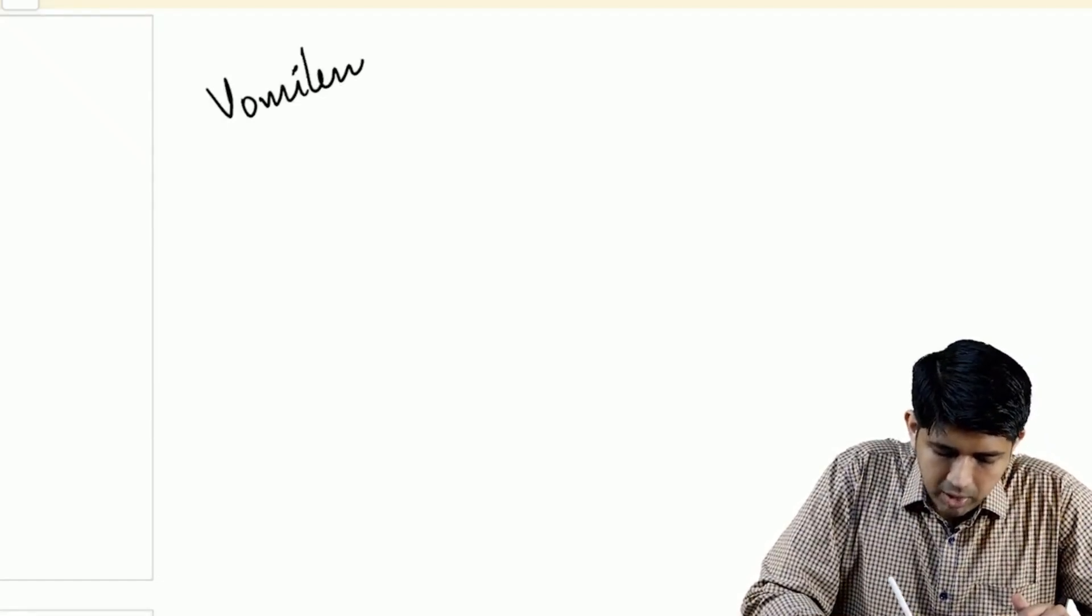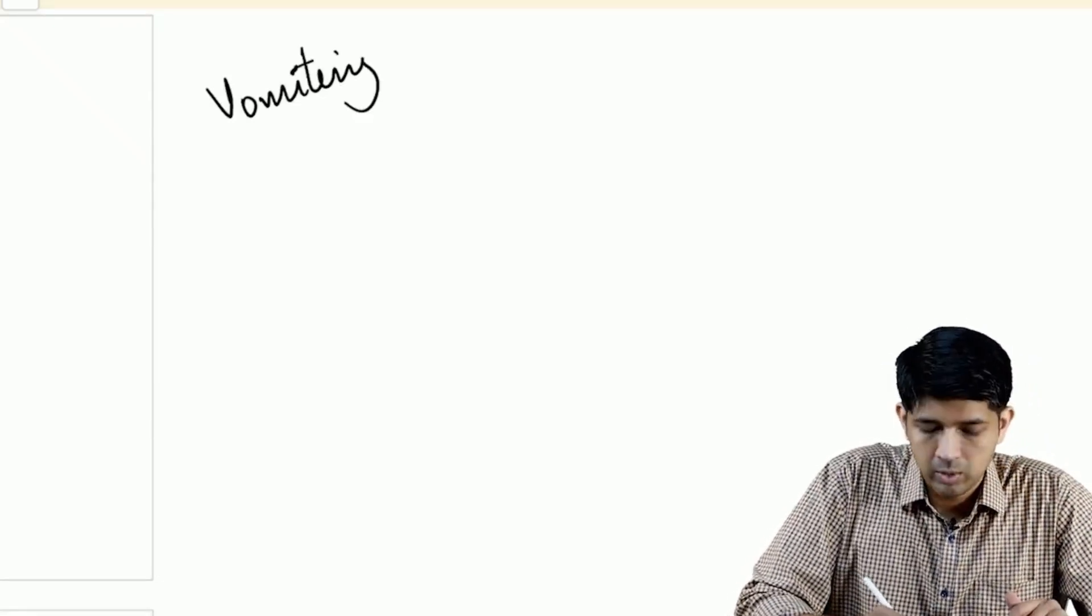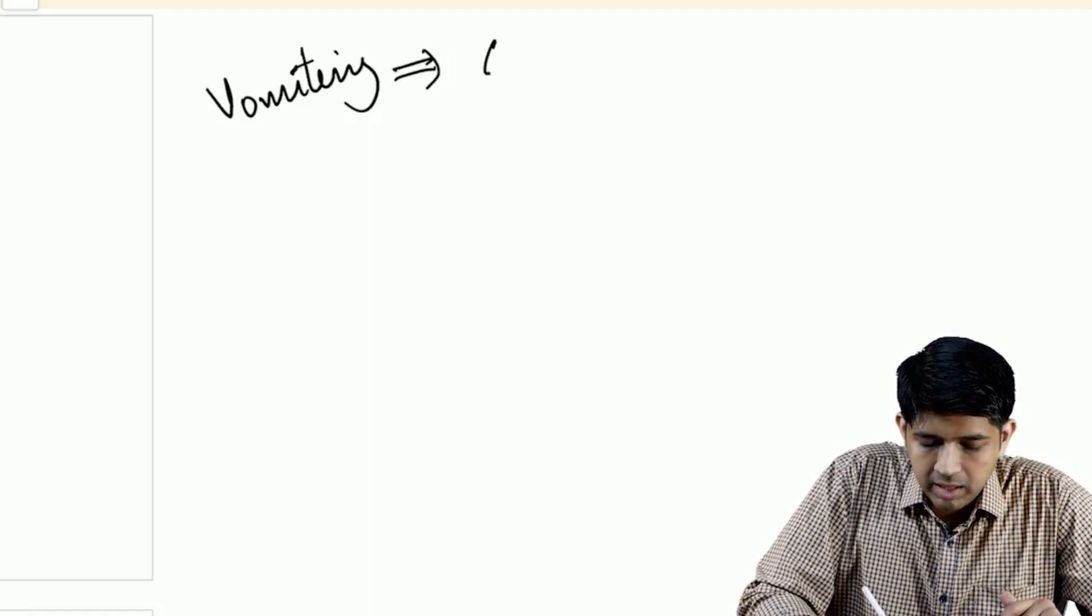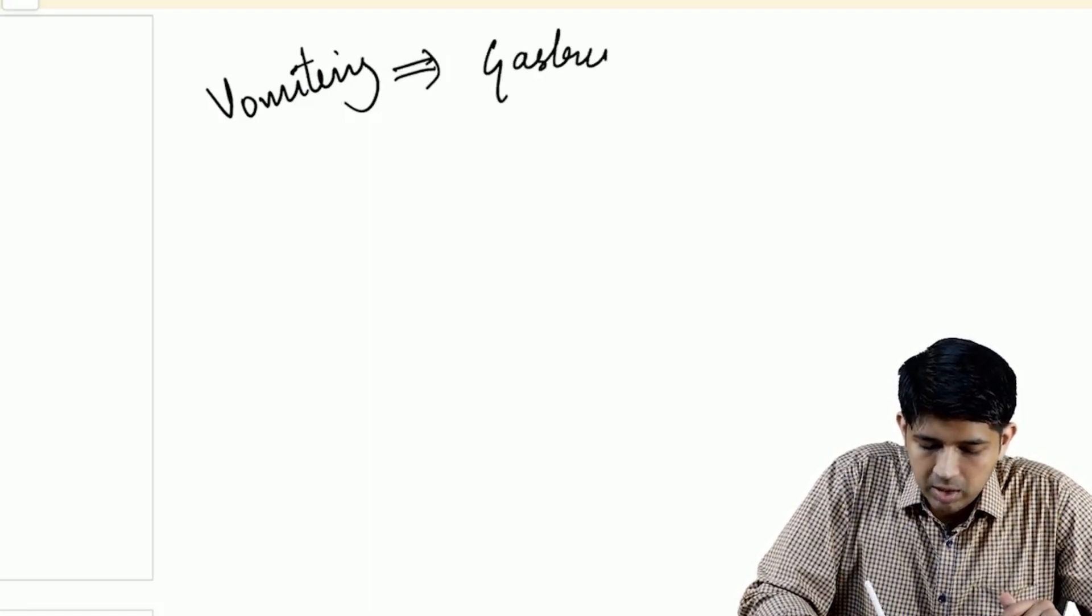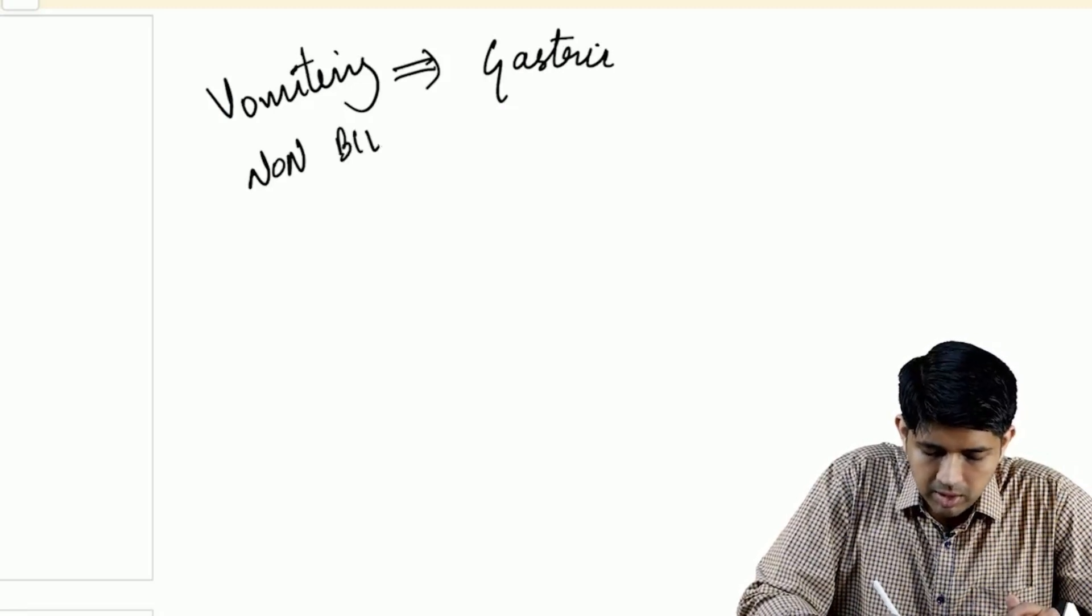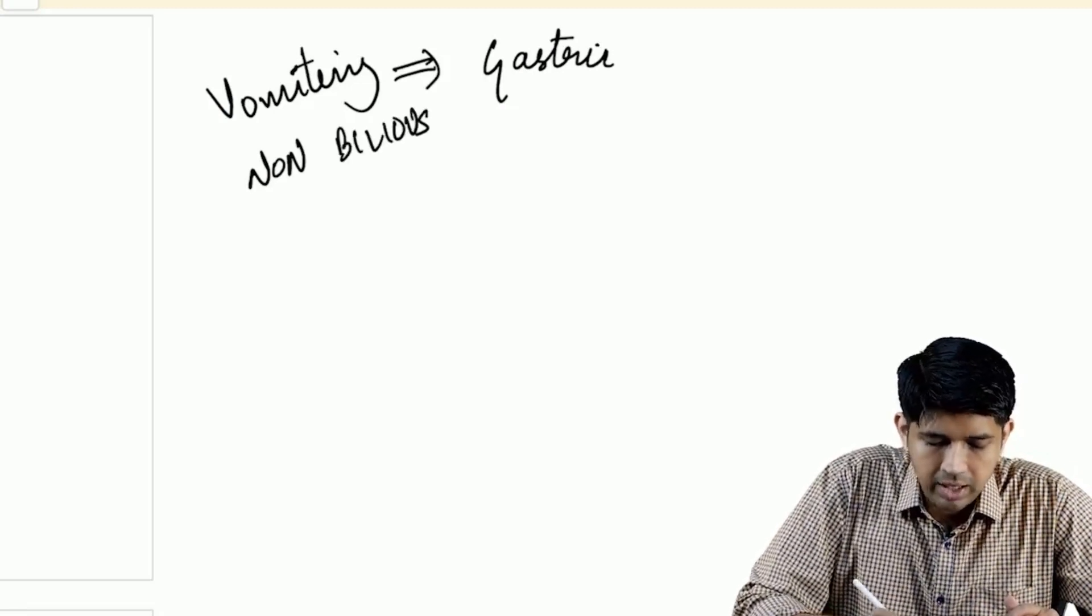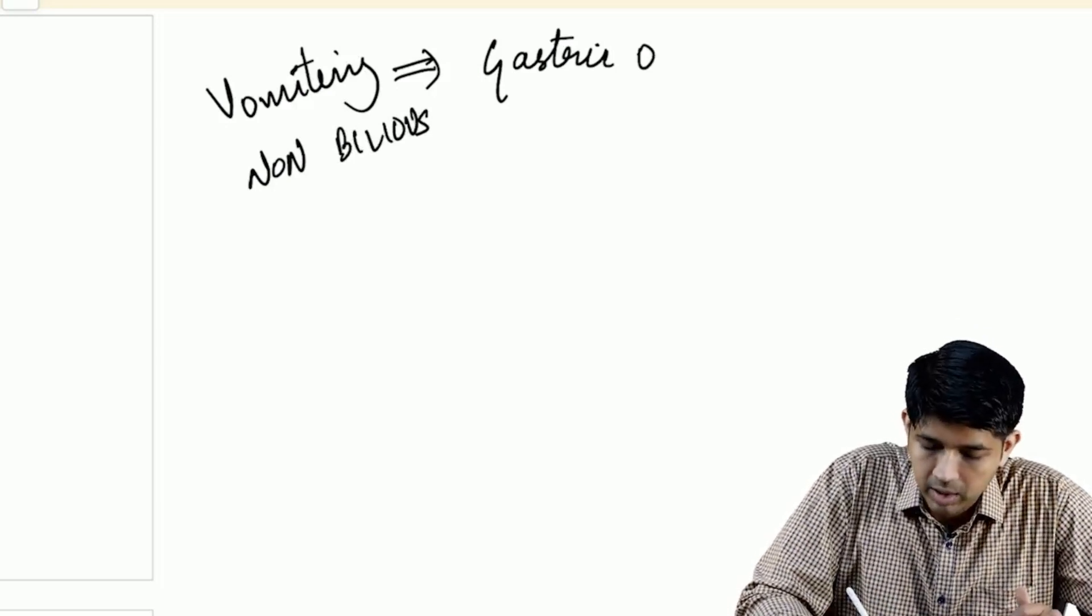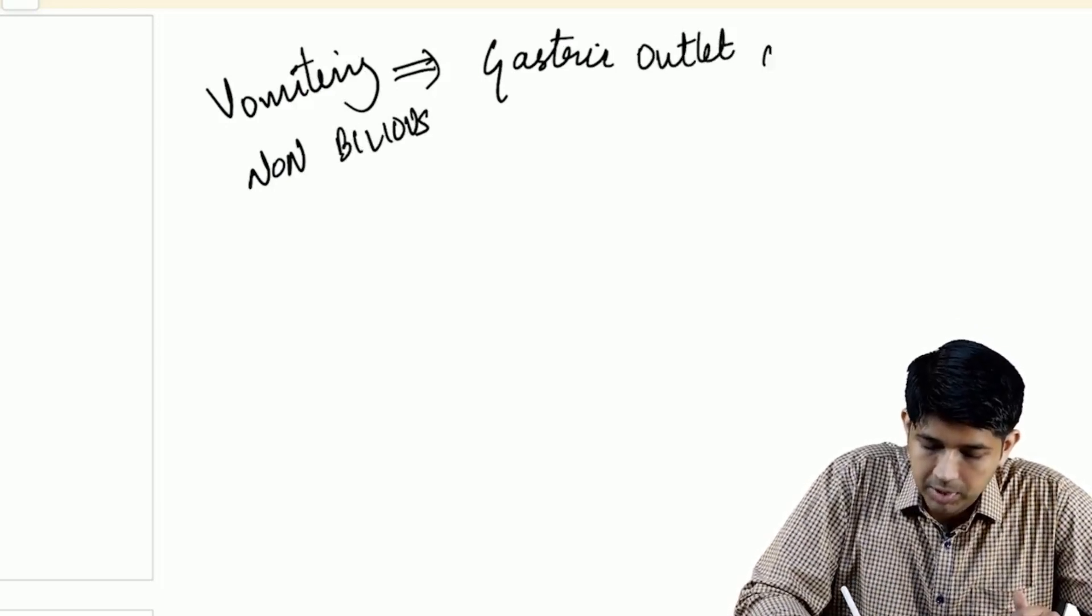Vomiting is a very important symptom. Vomiting invariably suggests gastric outlet obstruction, which is a non-bilious type. I'm talking only in terms of CA stomach or gastric outlet obstruction secondary to peptic ulcer.